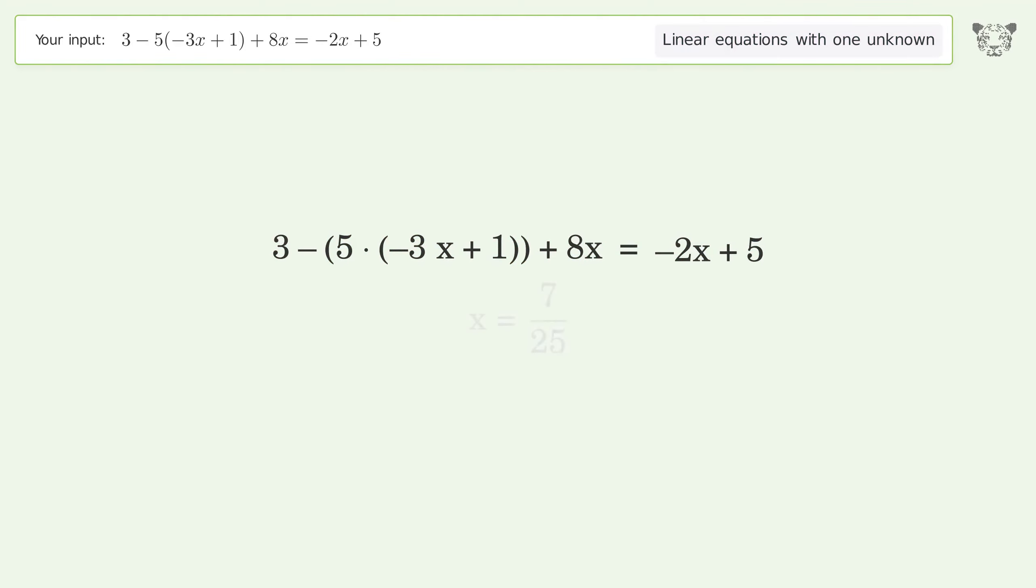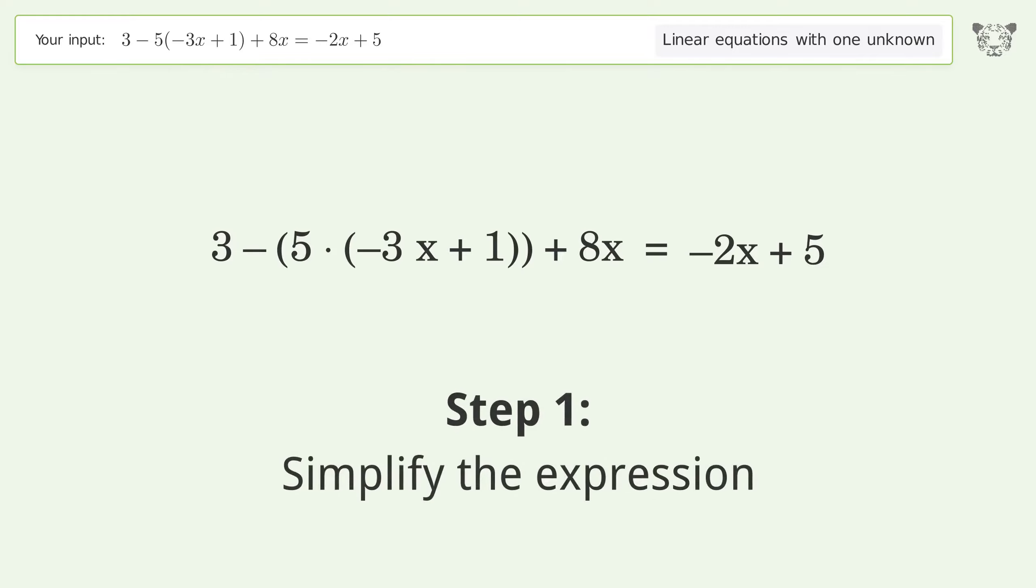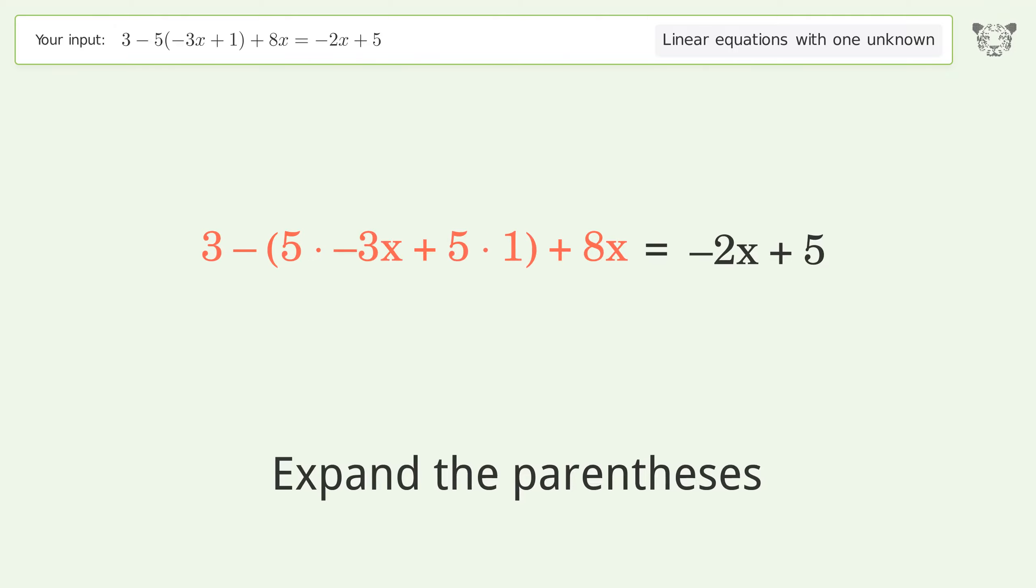You asked Tiger to solve this. It deals with linear equations with one unknown. The final result is x equals 7 over 25. Let's solve it step by step. Simplify the expression.